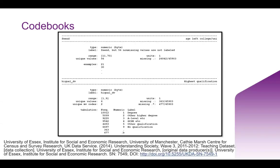Having a closer look at code books, you can see this one from the Understanding Society Teaching Dataset. You can see the variable name, label, and where applicable options for responses or the range of responses. Unlike embedded metadata shown earlier with the data level documentation, this code book can sit separately and can be open as well. You can include this kind of thing as part of your project level or study level documentation if you want to.